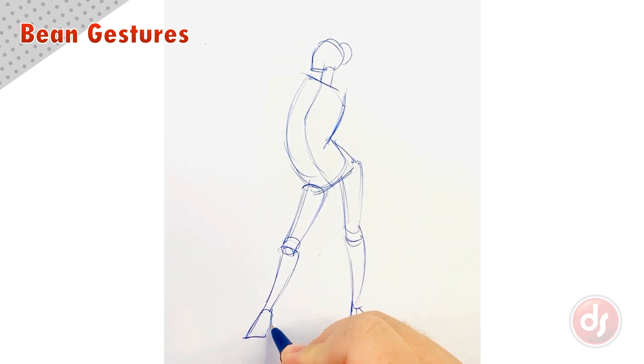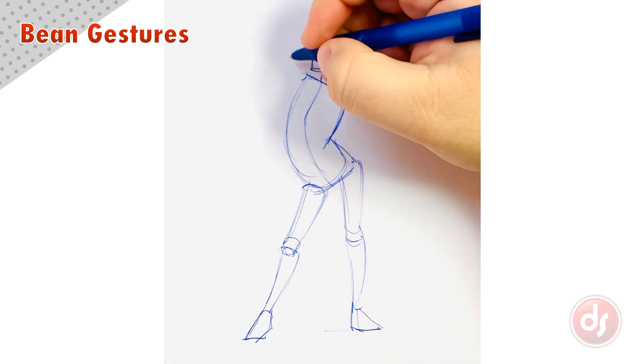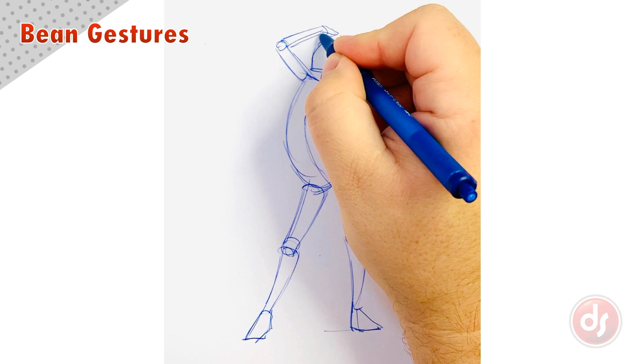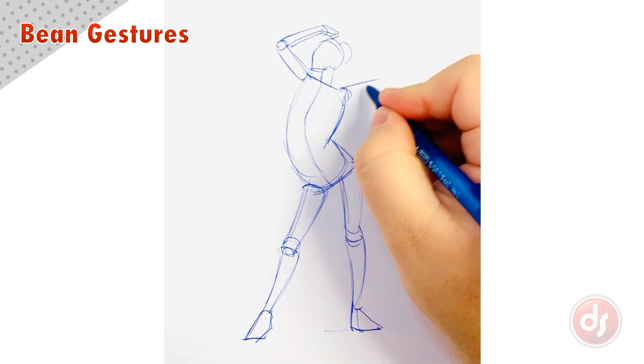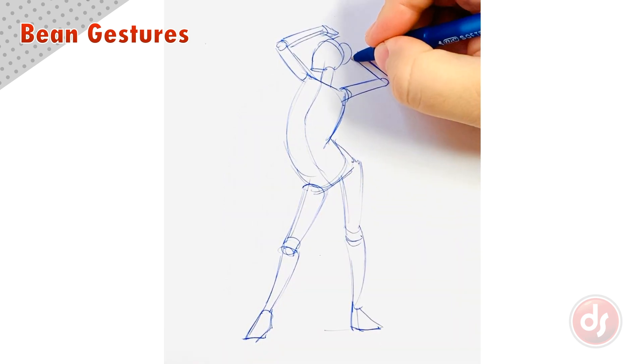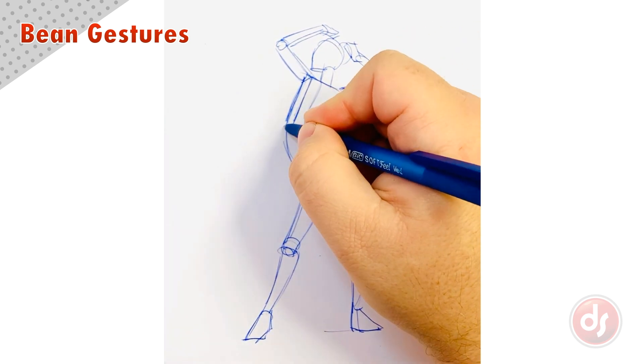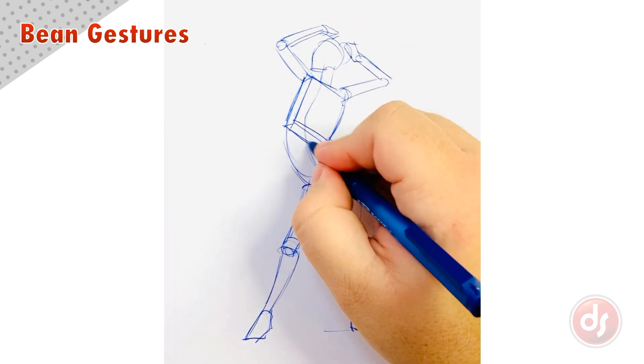As I draw these gestures, I am constantly looking at my subject and analyzing angles, alignments, proportions, or the forms. It takes a lot of focus, but the more you do, the better your initial observations get. Over time, your gestures will be more and more accurate on your first pass.